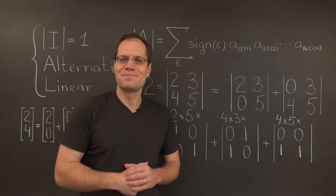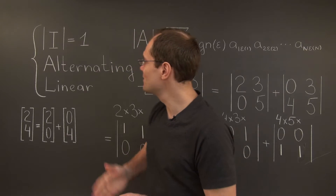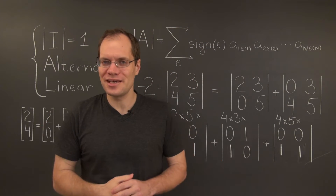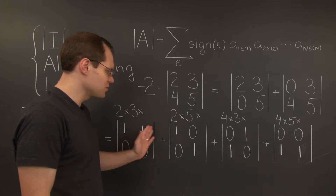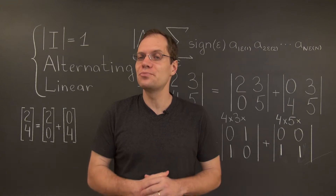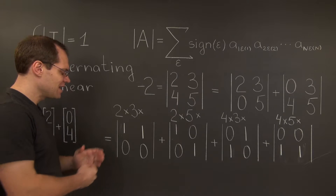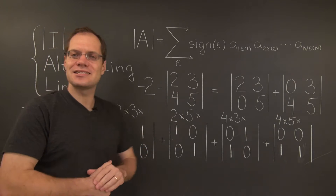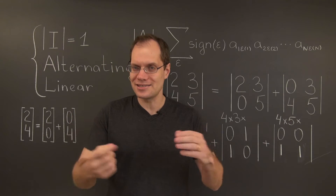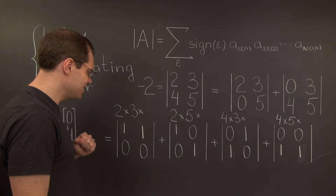Now we're completely done with the linear property. It is now time for the identity property and the alternating property to shine together, because each one of the remaining determinants can be evaluated with the help of those two properties alone. The first one has two identical columns; therefore, by the alternating property, this determinant is zero.